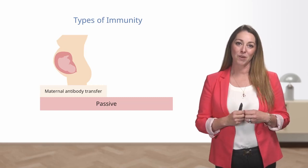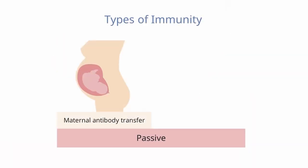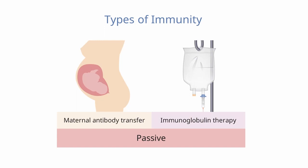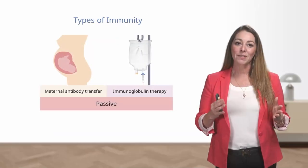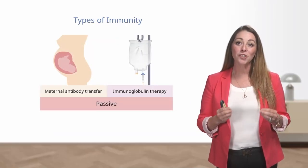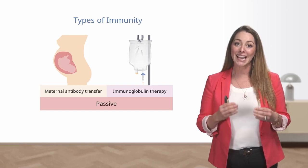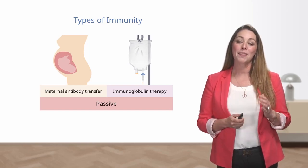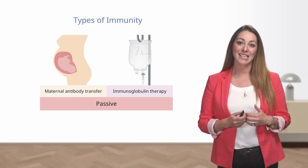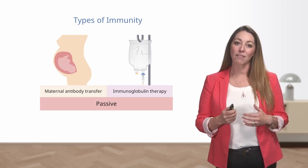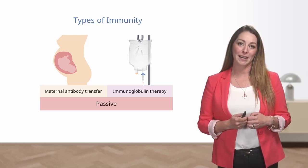The second way that one can be given passive immunity is through receiving immunoglobulin therapy — transferring immunity through the administration of immunoglobulin in a healthcare facility. For example, if someone is bitten by a venomous snake, they receive antivenom, which is really just a combination of antibodies against that snake's venom. The best part about passive immunity is that it's immediate; however, it only lasts for a short period of time.